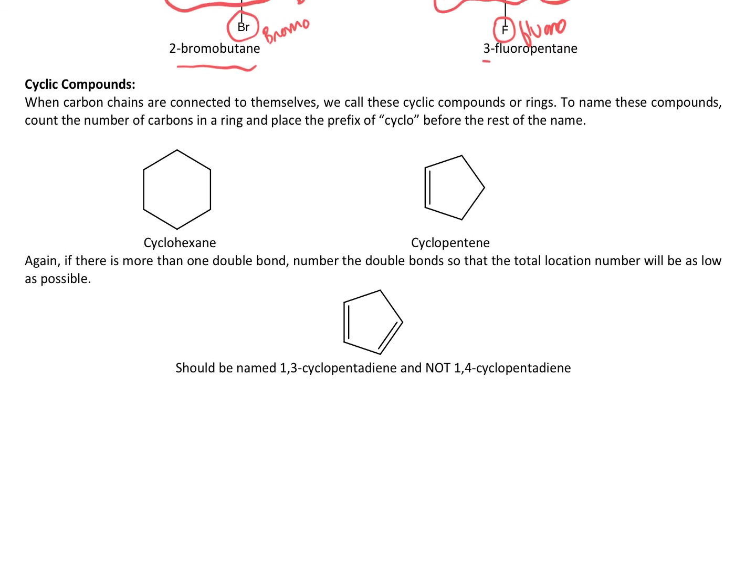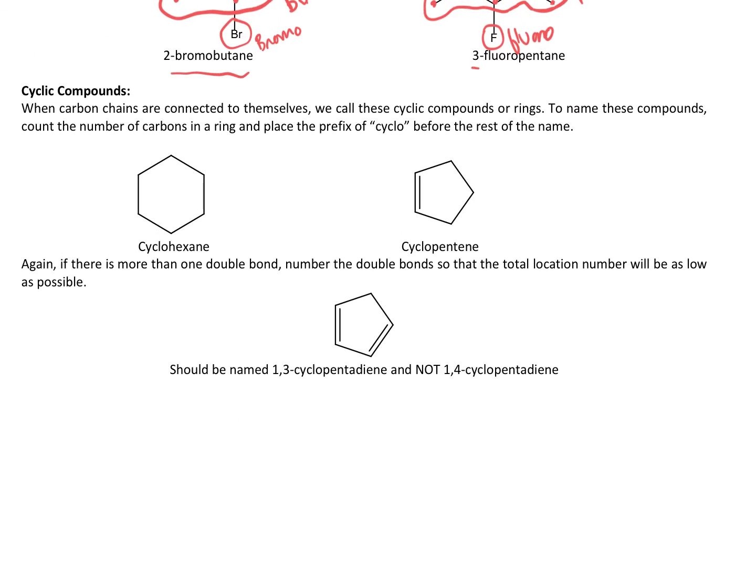We can also have cyclic compounds. Cyclic compounds happen when you form a ring. This first example here is known as cyclohexane. When you put things into a ring, you just add the term cyclo on the front. That's telling people that it's in a ring. Hex means that it's a six-membered ring, and -ane means that all of our bonds are single bonds. So 1, 2, 3, 4, 5, 6.